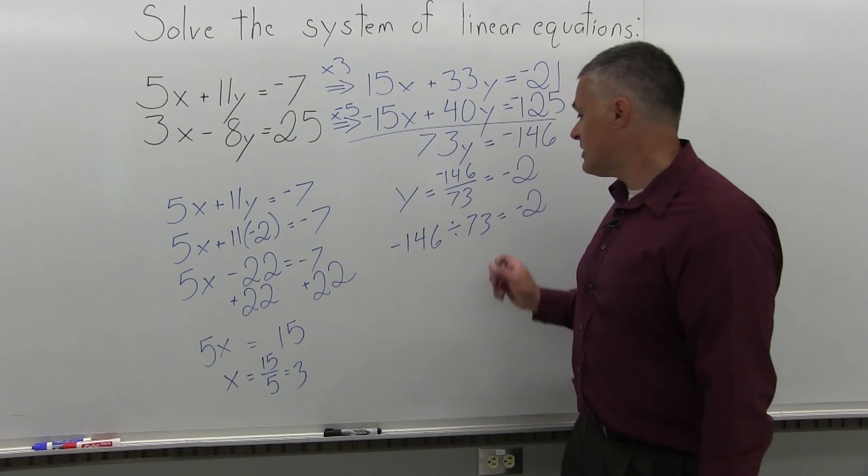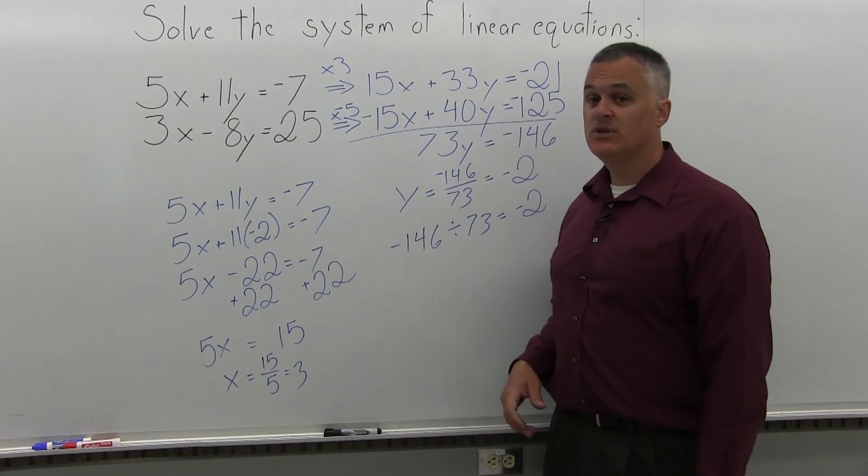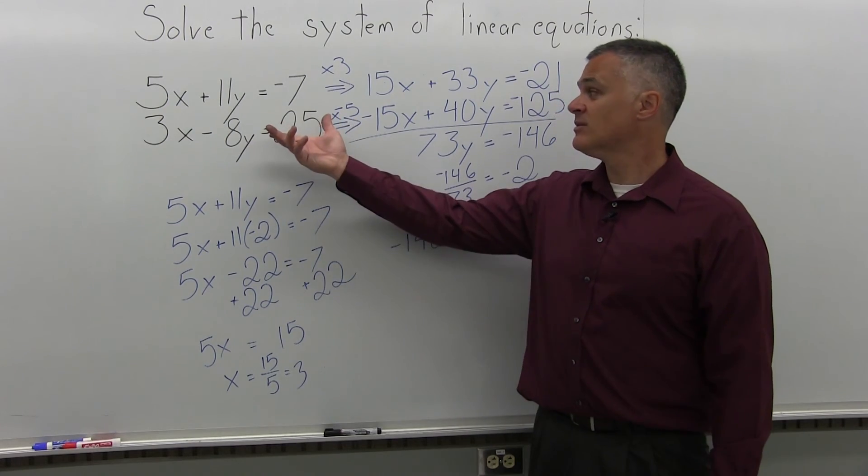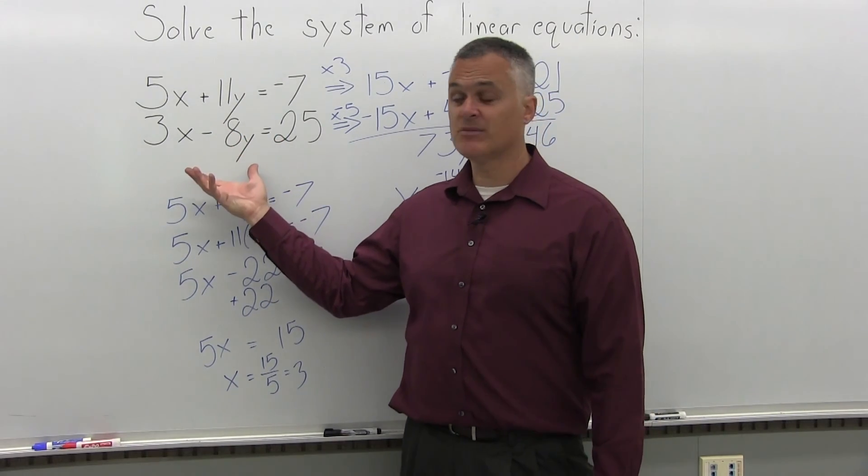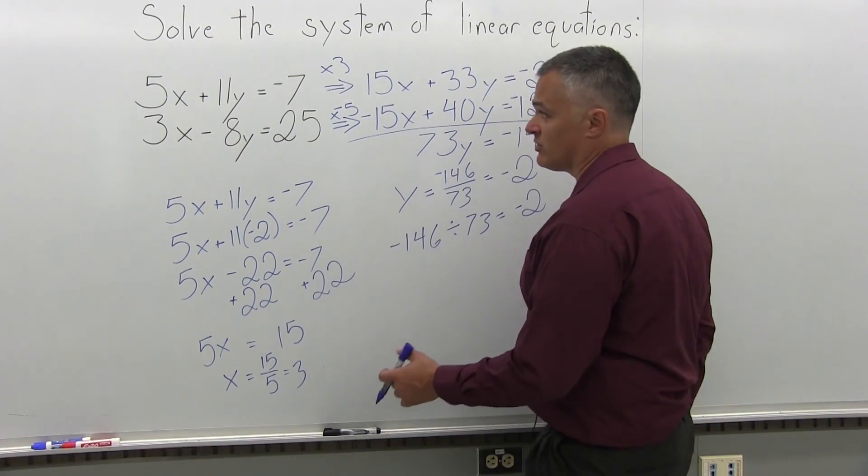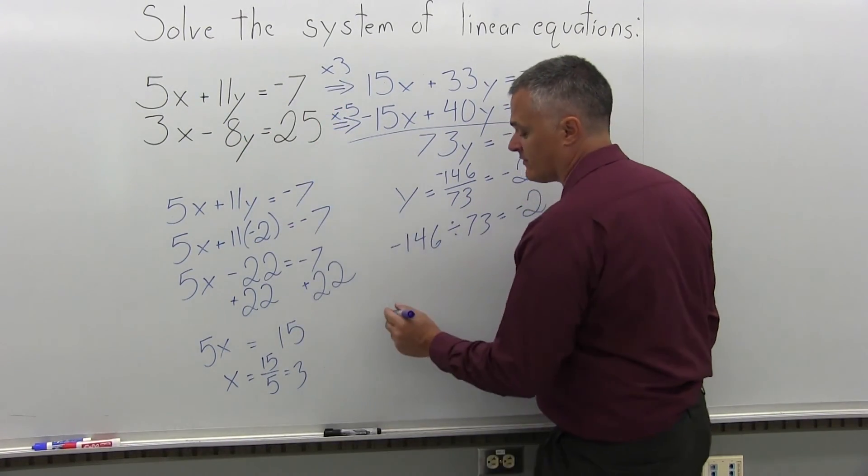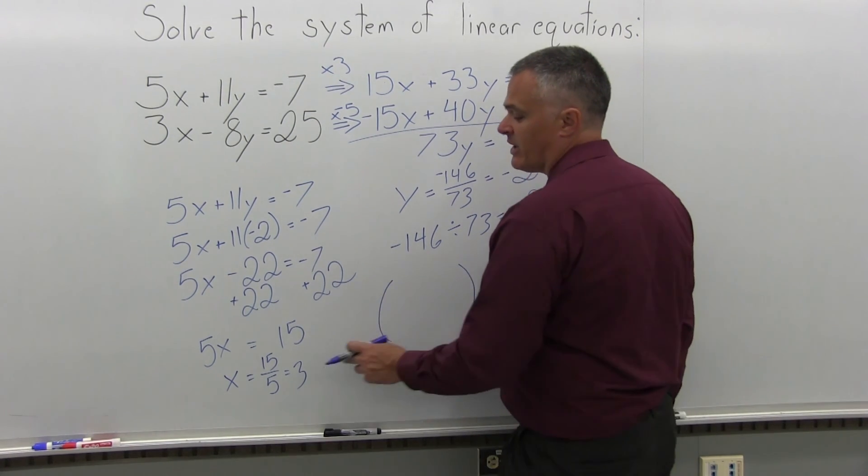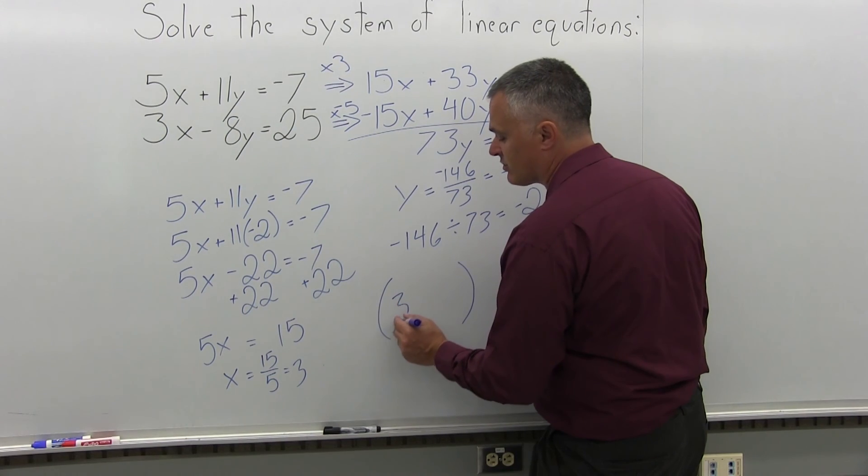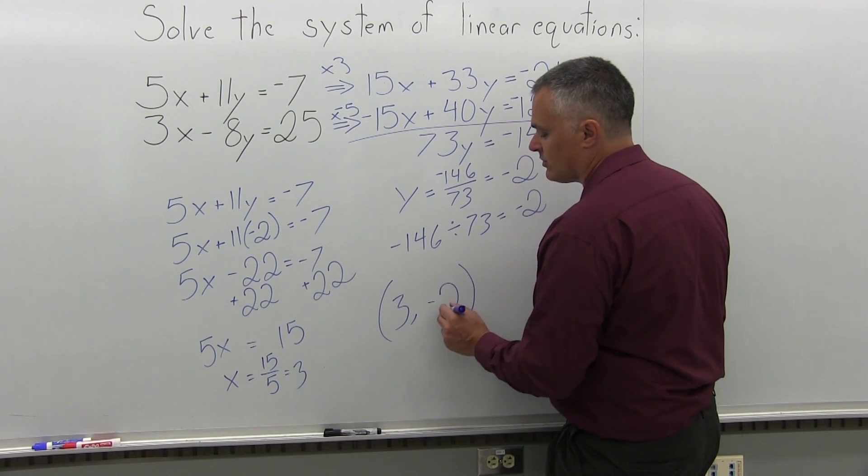So x equals 3 and y equals negative 2 is the solution for this system of linear equations. Those values of x and y make both equations true at the same time. Or, if you want to think of it in terms of a graph, if you saw the graph of those two linear equations, the point at which they would intersect would have an x coordinate of positive 3 and a y coordinate of negative 2.